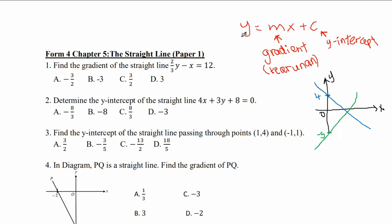You have to remember this equation — it's very important: y equals to mx plus c. Number 1: find the gradient of the straight line 2 over 3 y minus x equals to 12. So we have to find the gradient — find m. All we need to do is just rearrange this equation.